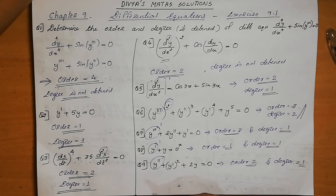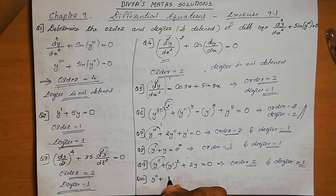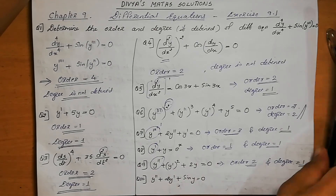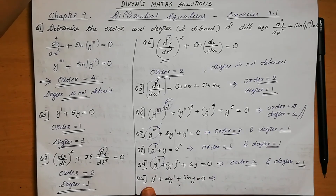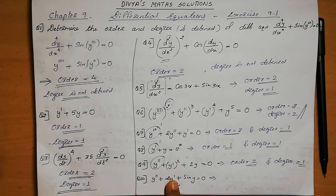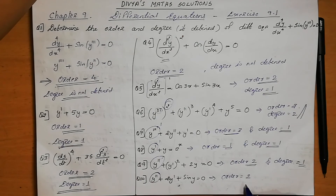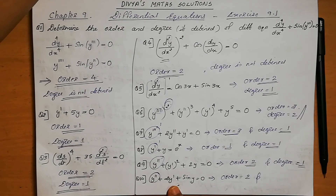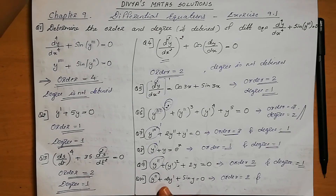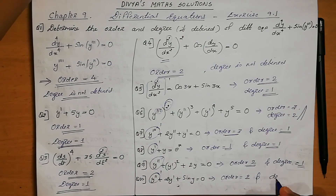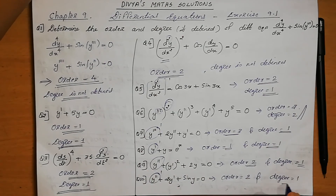Question number 10: y'' + 2y' + sin y = 0. Here, y'' is the second derivative and y' is the first derivative. The highest order derivative is y'', so the order equals 2. This is a polynomial equation and the power of y'' is 1, so the degree equals 1.